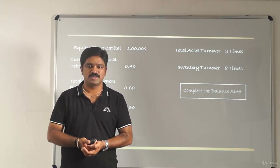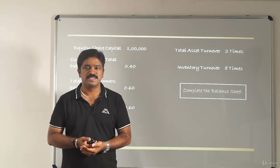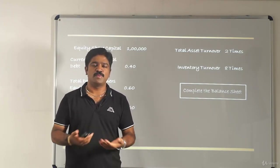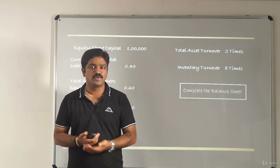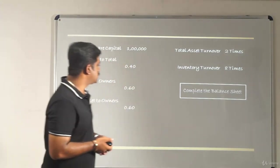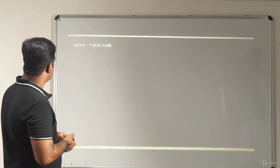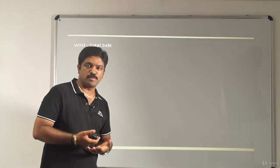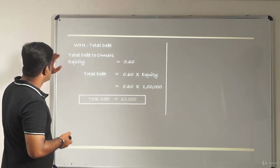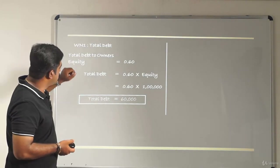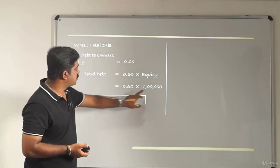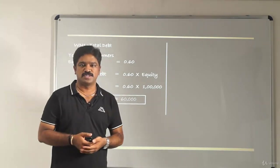Since there's no information to find cost of goods sold separately, we assume sales equals cost of goods sold. Similarly, since opening and closing inventory are not available, whatever inventory we derive will be treated as average inventory and the balance sheet figure. Working Note 1: total debt equals 0.60 multiplied by owner's equity (100,000), giving total debt of 60,000.